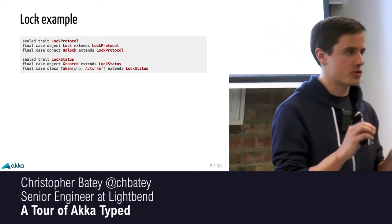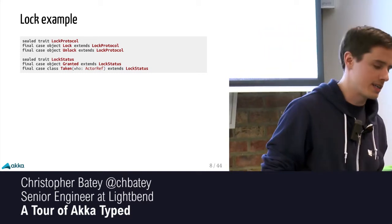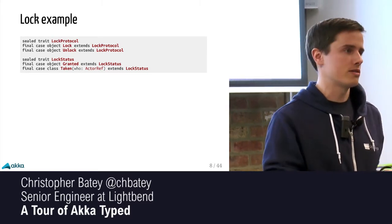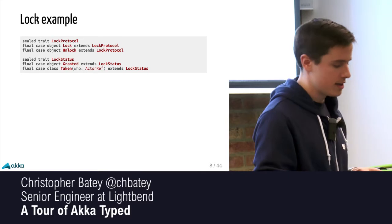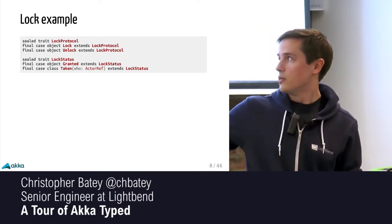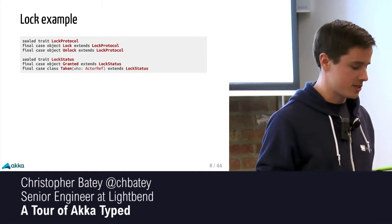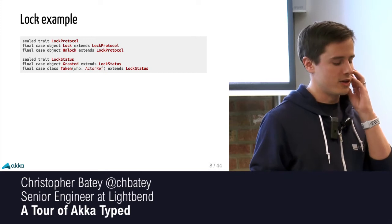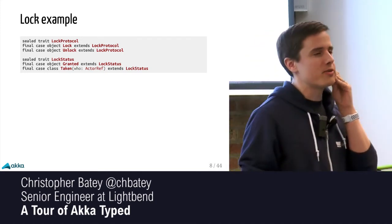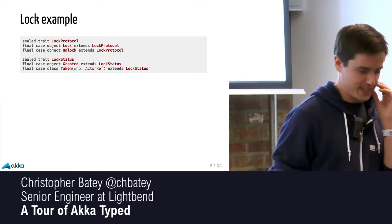The protocol is very simple. I've defined a sealed trait for the messages that can be sent to the actor — though you don't need to do that even in an untyped actor. Essentially you can either ask it to lock or ask it to unlock, and then you're expecting a message back. There's a type for that as well: a lock status class where you can say the lock's been granted, or no, you can't have it because another actor has taken the lock.